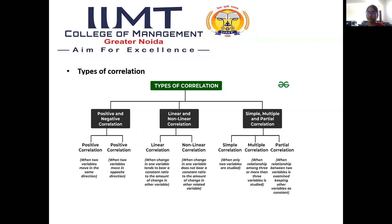Moving to types of correlation. Correlation can be broadly classified into three parts: positive and negative correlation, which is based on the directions of the variables; linear and non-linear correlation, which is based on the changing proportions of the variable; and simple, multiple, and partial correlation, which is based on the number of variables under study.